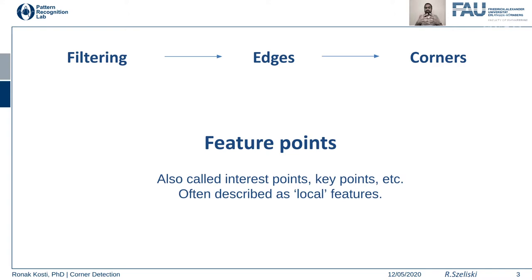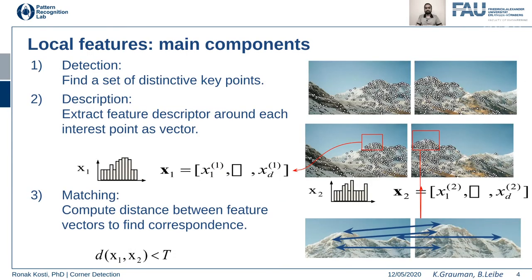Corners have a distinctive characteristic — they are more unique compared to edges. Feature points are also called interest points, key points, or corner points; these are all considered local features. The main components of local features are: first, detecting a distinctive set of key points, and then describing them in a compact vector form.